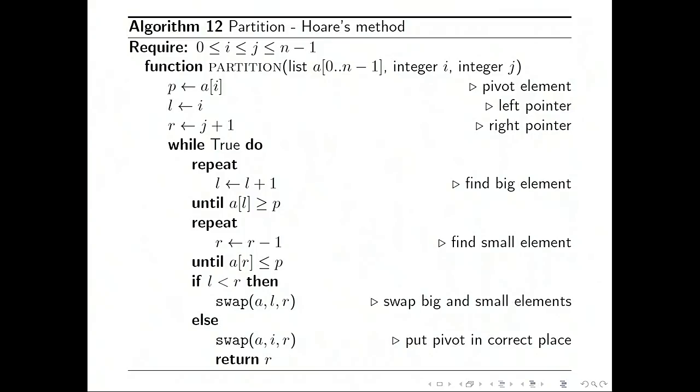So we first choose the pivot element, then the left pointer is pointing to it, the right pointer is just past the end of the list. We increase the left pointer until we find the element which is at least as big as the pivot. We then decrease the right pointer until we find the element which is no bigger than the pivot.